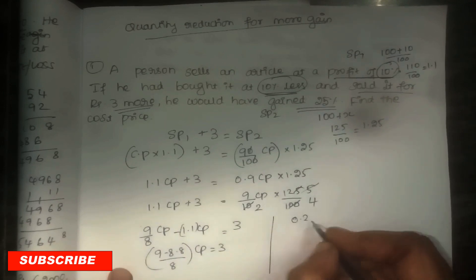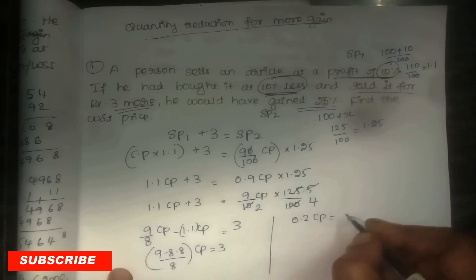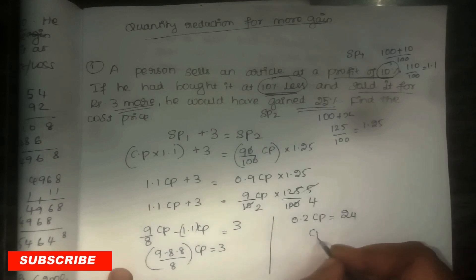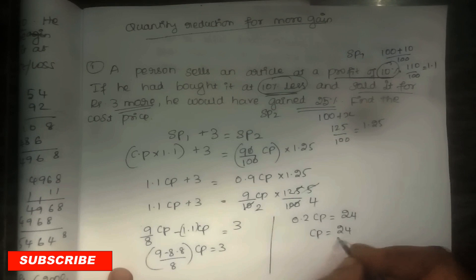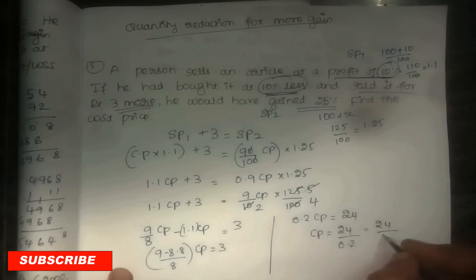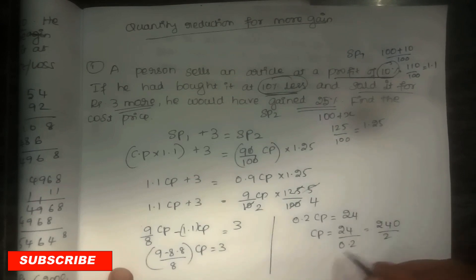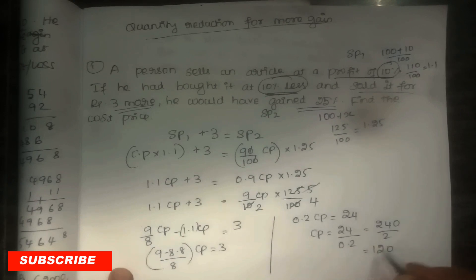So 0.2 CP is equal to 3 × 8 = 24. CP is equal to 24 divided by 0.2, which is 24/2 × 100 = 120. So CP is equal to Rs. 120.